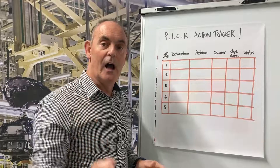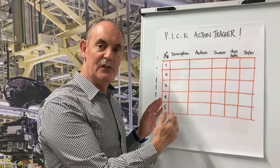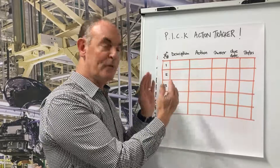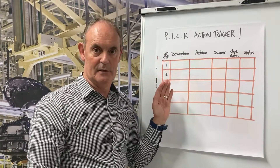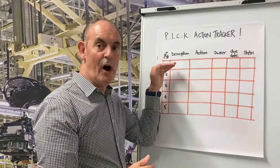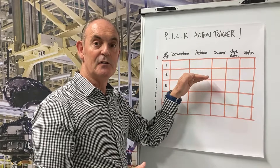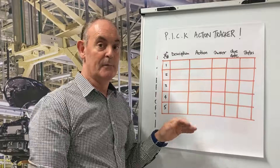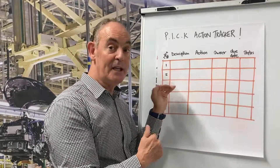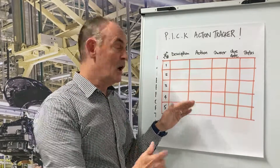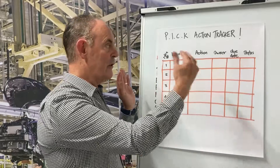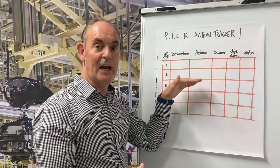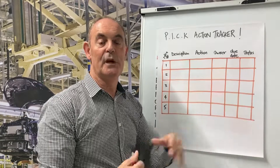Step number five is where you take those ideas prioritized in the P and I quadrants and put them onto a tracker like this one. This is where you'll have the idea and action developed, owned, and given a due date to follow it through. You might find that per each idea, you have multiple actions. Whether it's an Excel sheet or a board tracker, the idea is capturing the actions and following them all the way through to a solution.